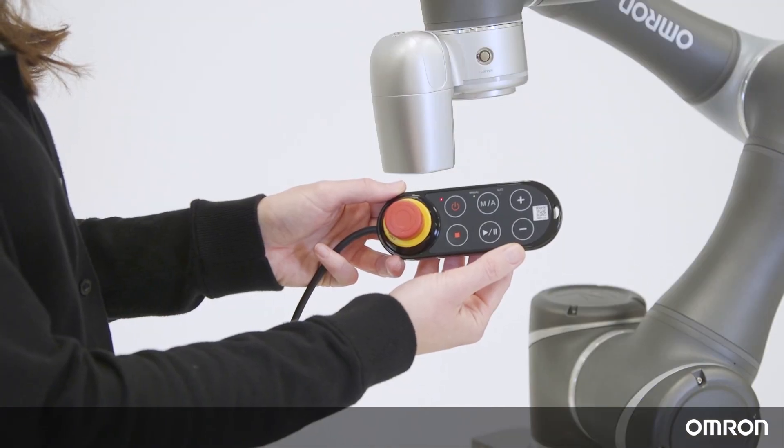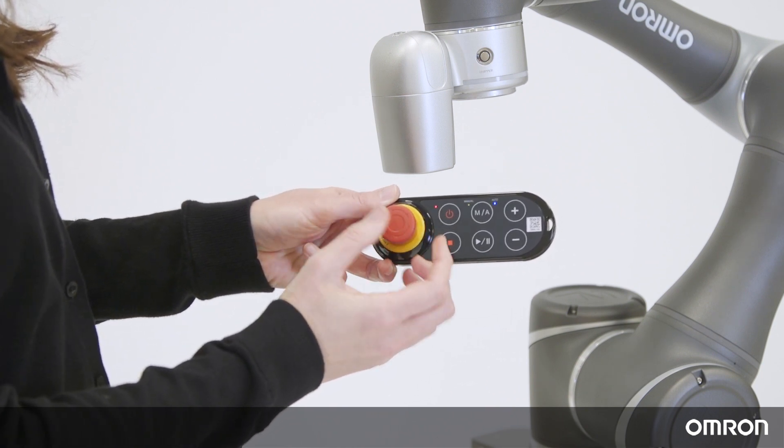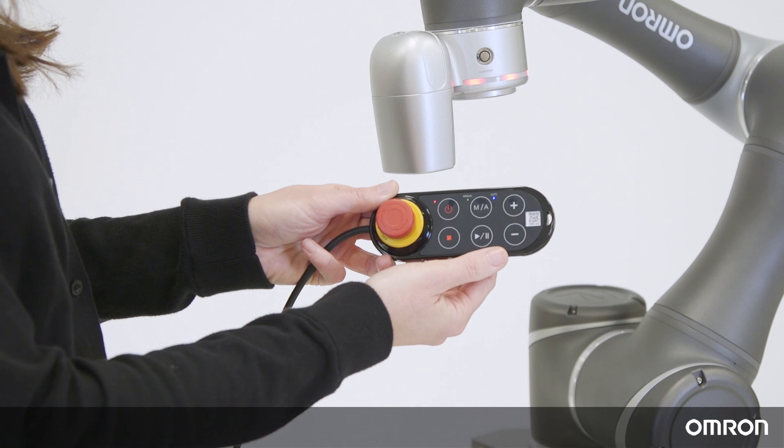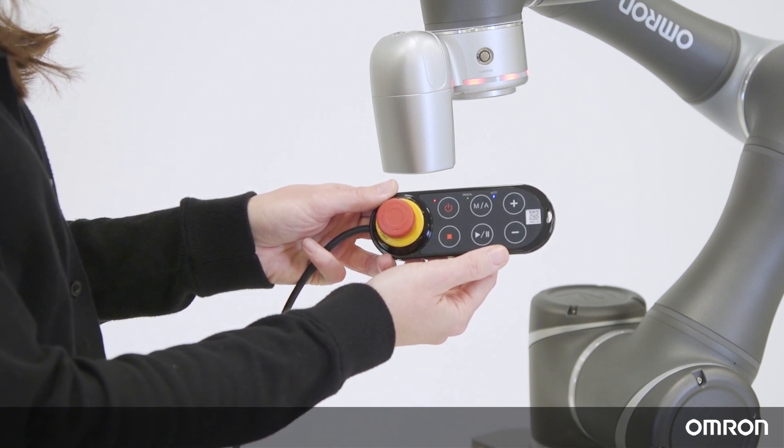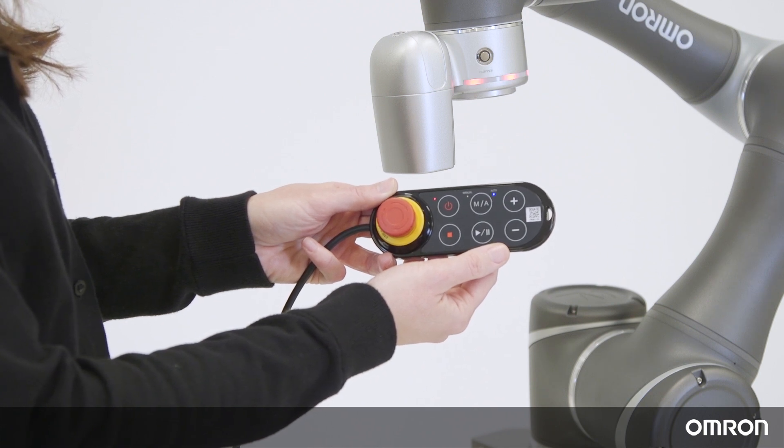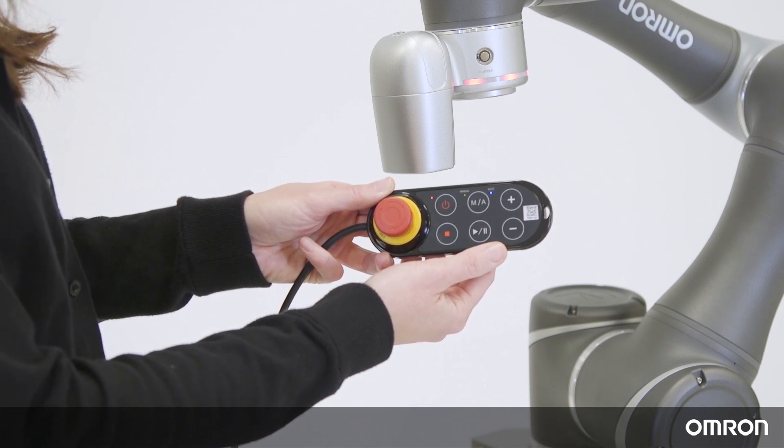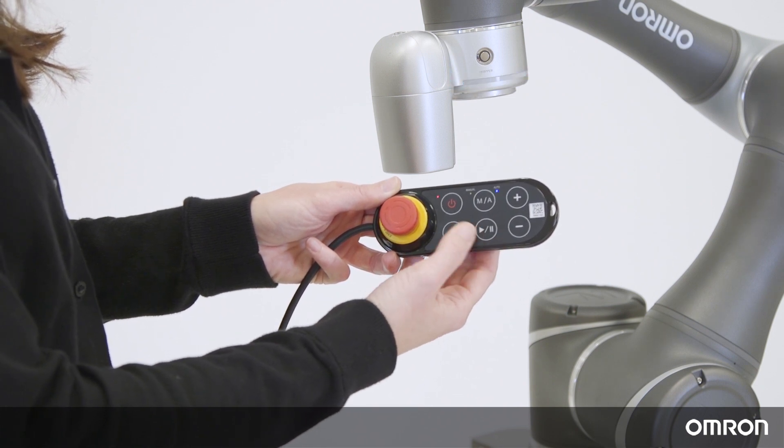To recover from e-stop, turn the e-stop button clockwise to release it. The cobot light ring will start blinking in red. In about 10 seconds, the light will start blinking in blue when the cobot enters into safe start mode. Press the stop button on the robot stick for 3 seconds.